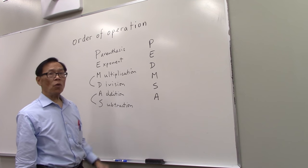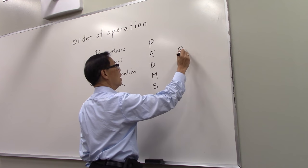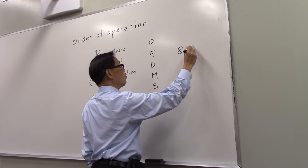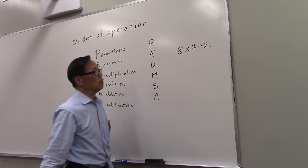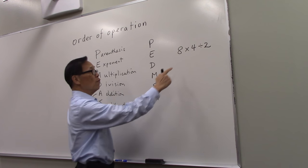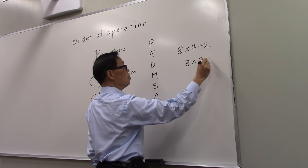This will always work. For example, if you have 8 times 4 divided by 2, 4 divided by 2 is 2, 8 times 2 would be 16.